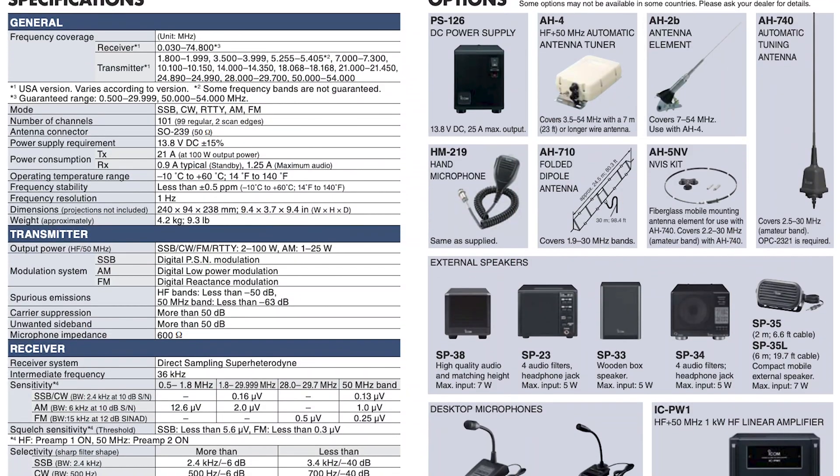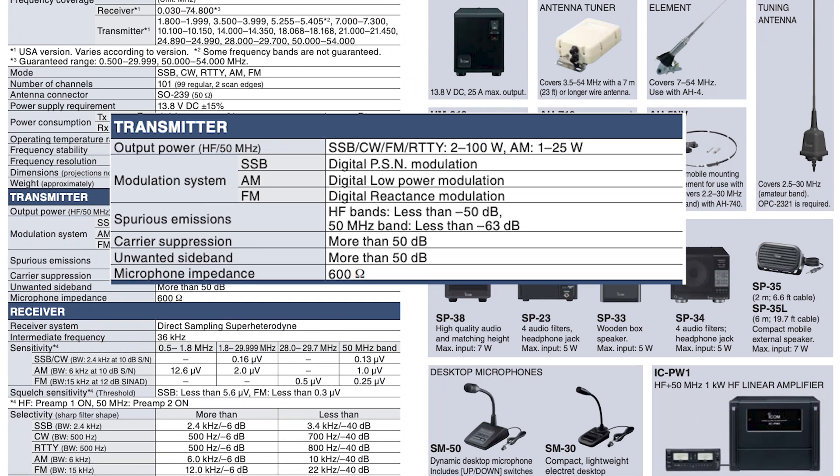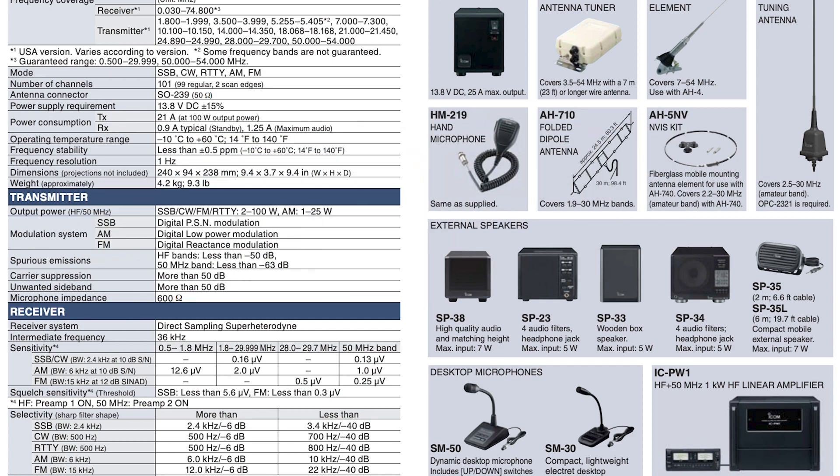There are some radios that cheat a little bit — the older ICOM radios use the ALC (automatic level control) to kind of squeeze back the modulation so it under-modulates slightly, giving you more carrier power — up to 40 watts on a 100-watt radio. But most modern radios, including the ICOM 7300, will only give you 25 watts. If you're going for the legal limit of 1500 watts peak envelope power, you can do a maximum of 375 watts of carrier.